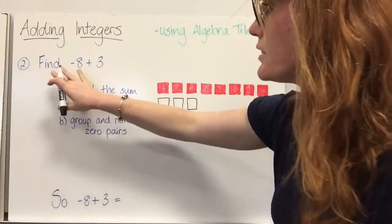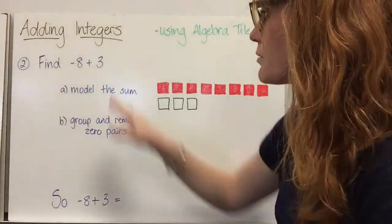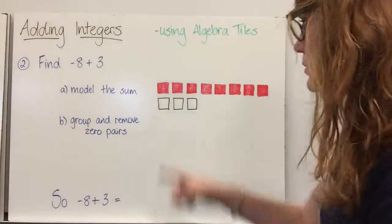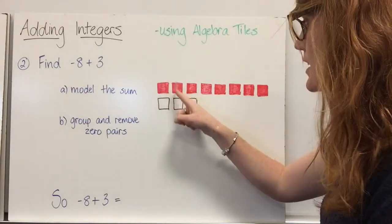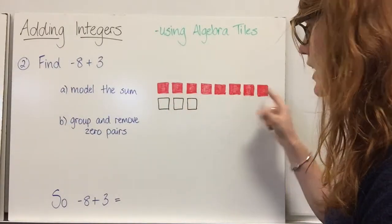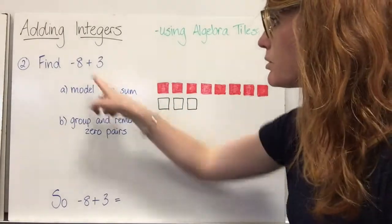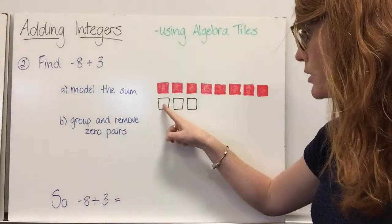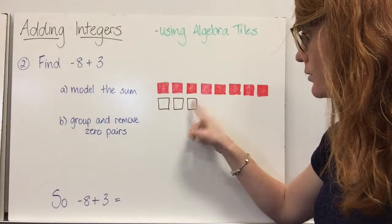Find negative eight plus three. First, we're going to model the sum. We have negative eight — one, two, three, four, five, six, seven, eight — plus three. Here we have positive three — one, two, three.